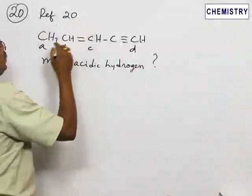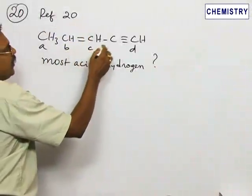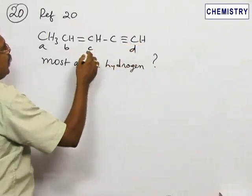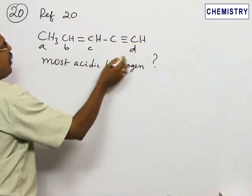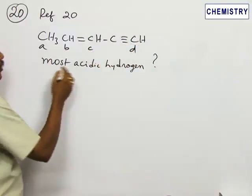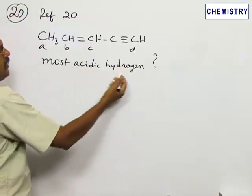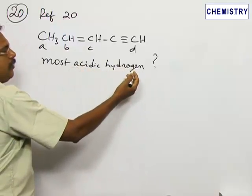Number 20, reference 20: CH3-CH=CH-C≡CH, and four hydrogens are marked as A, B, C, D. We have to find out the most acidic hydrogen. The most acidic hydrogen is the hydrogen that...